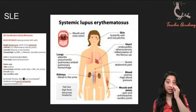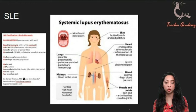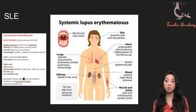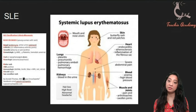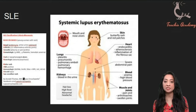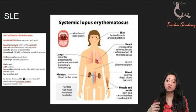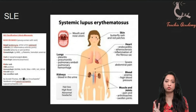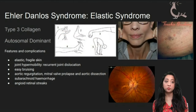Treatment for antiphospholipid antibody syndrome includes low-dose aspirin and heparin. Drug-induced lupus is associated with anti-histone antibodies and affects the metabolism of three classical drugs: procainamide, hydralazine, and quinidine — related to the acetylation of these drugs. When given these drugs, patients may develop arthritis, myalgia, and rash. These two conditions are sometimes associated with SLE and in the same family.